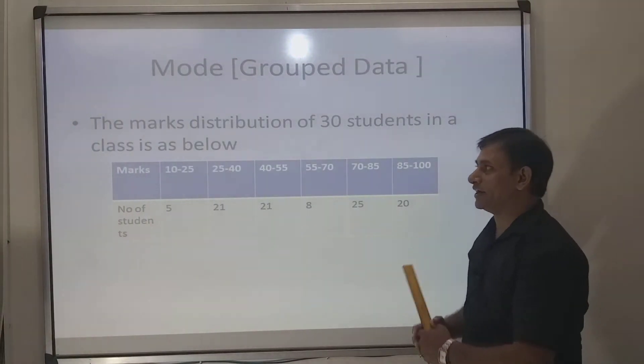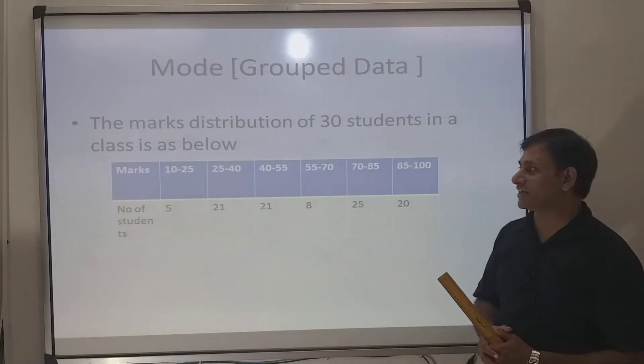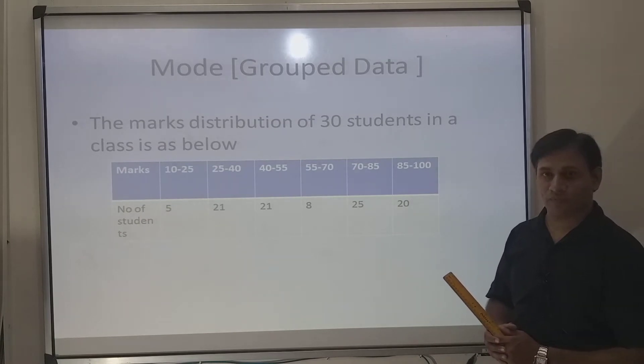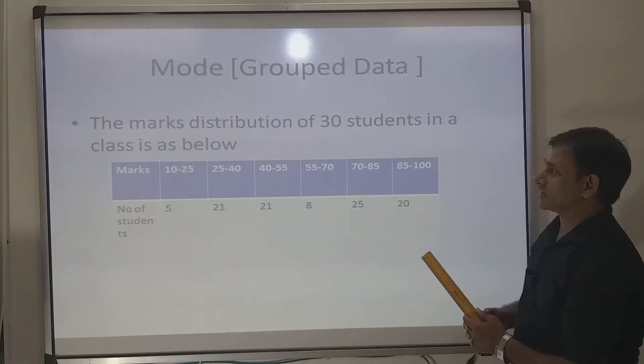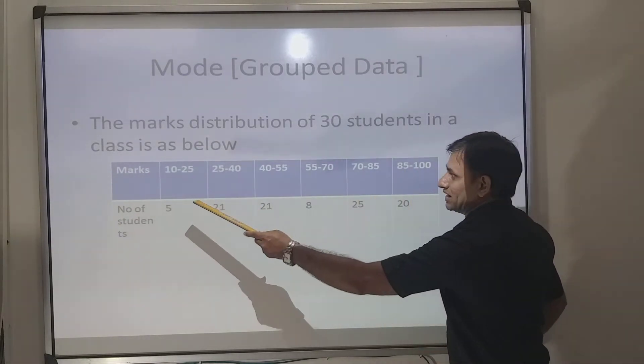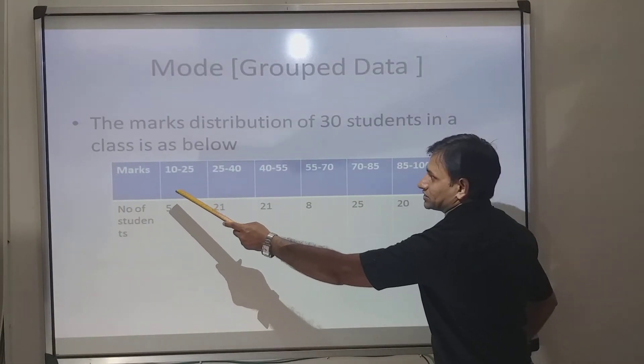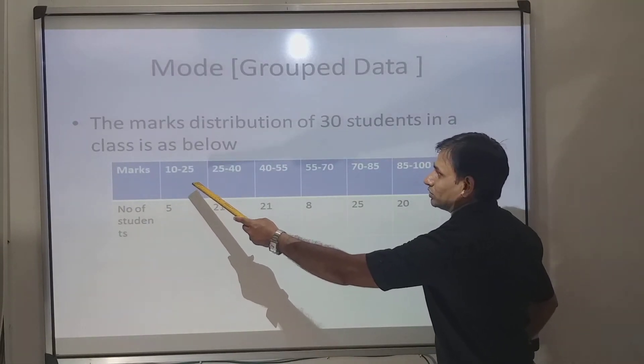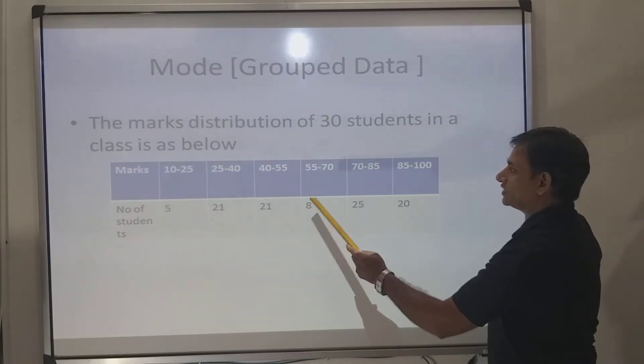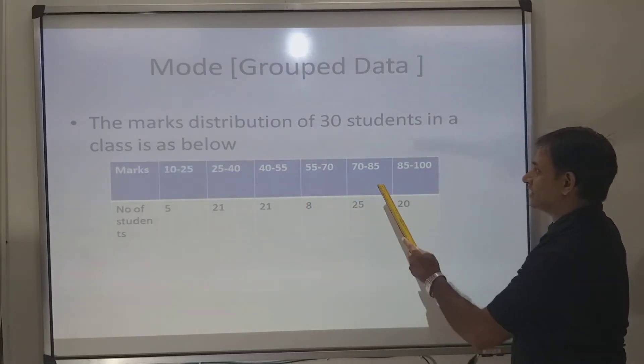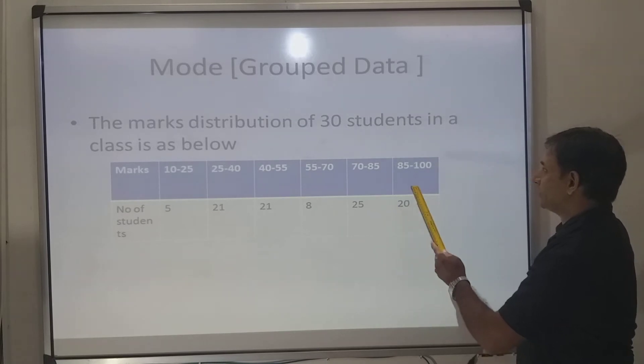Mode for grouped data. We will directly see the class distribution. Marks obtained by 30 students. 10 to 25: 5 students, 25 to 40: 21 students, 40 to 55: 21 students, 55 to 70: 8 students, 70 to 85: 25 students, 85 to 100: 20 students.